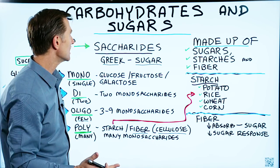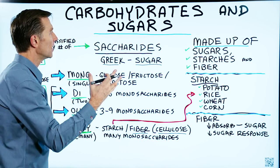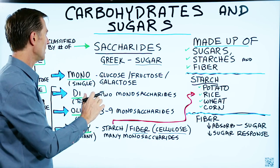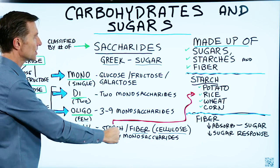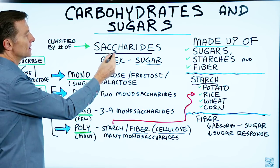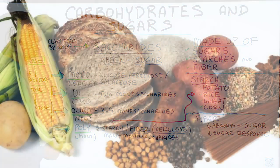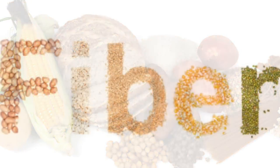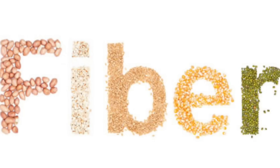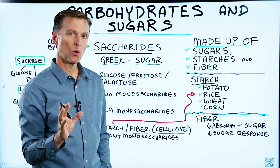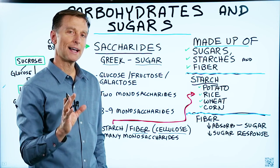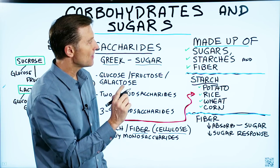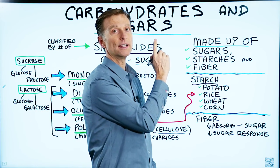That's the complexity of a carbohydrate in relationship to simple sugars, complex sugars, saccharides, starches, and fiber. The next thing that would be good for you to know would be more on the glycemic index — I put that video right here.